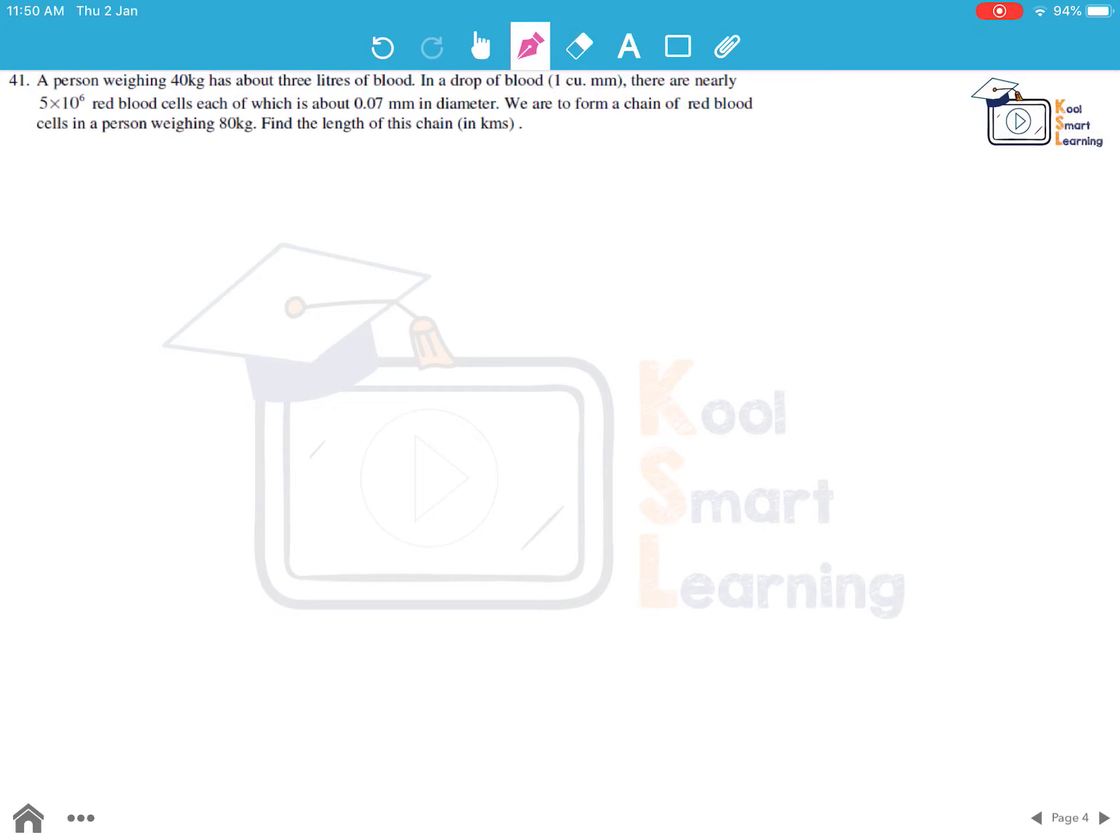Moving to the next question. A person weighing 40 kg has about 3 litres of blood. In a drop of blood which is 1 cubic millimetre, there are nearly 5 into 10 to the power 6 red blood cells each about 0.07 mm in diameter. We are to form a chain of red blood cells in a person weighing 80 kg. So if 40 kg person has 3 litres of blood, 80 kg person will have 6 litres of blood.